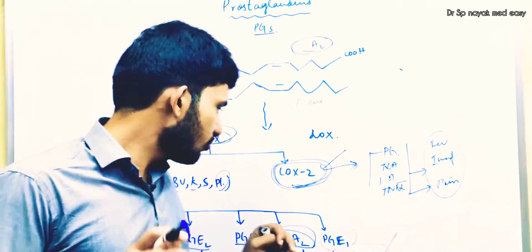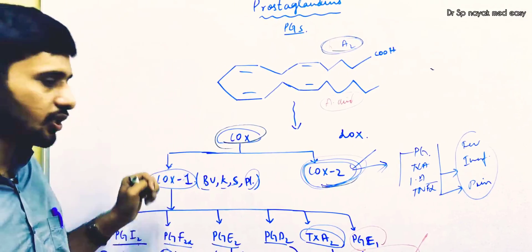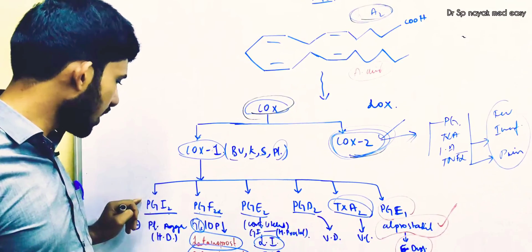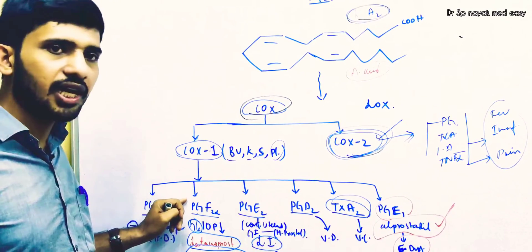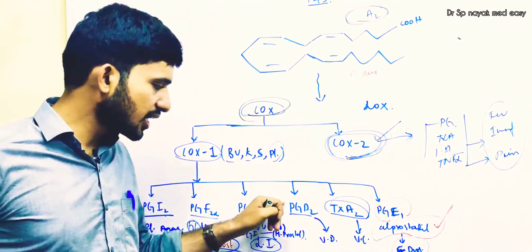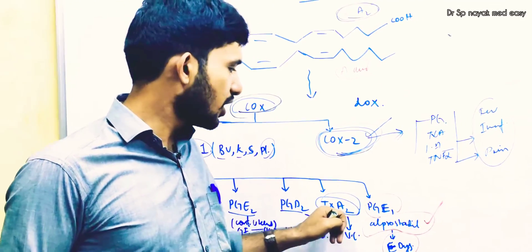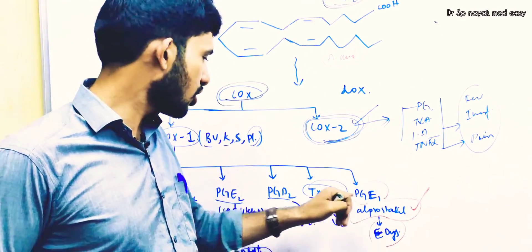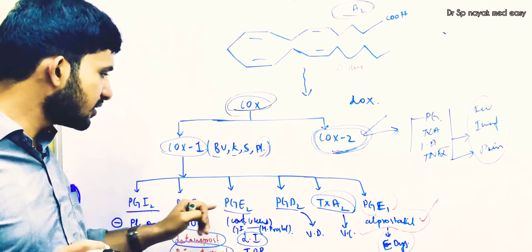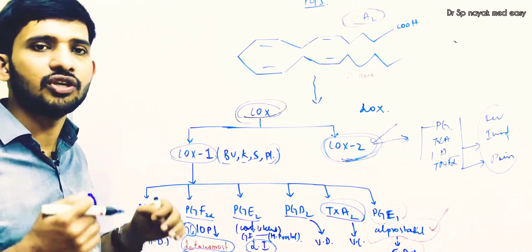COX-1 enzyme converts arachidonic acid into different forms of prostaglandins. Among them are: prostaglandin I2, prostaglandin F2 alpha, prostaglandin E2, prostaglandin D2, thromboxane A2, and prostaglandin E1. These are the different forms of prostaglandins and all of them have different pharmacological actions on different tissues.